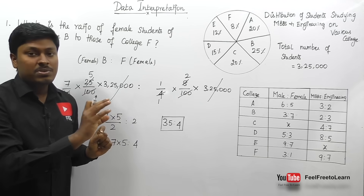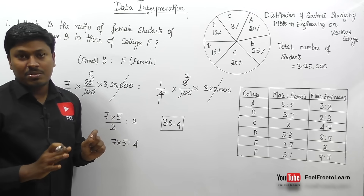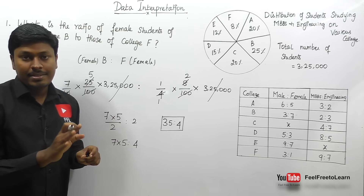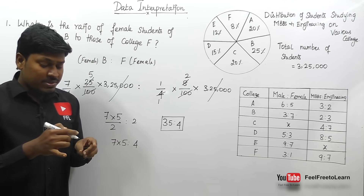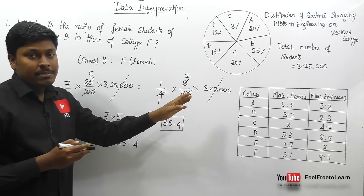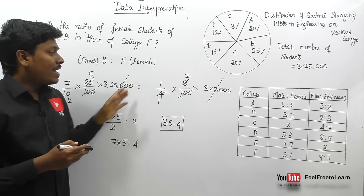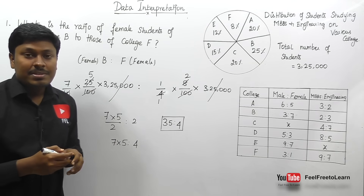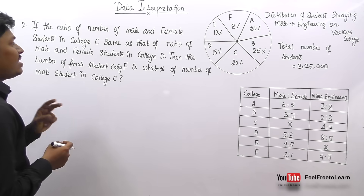So 7 fives are 35, giving a final ratio of 35:4 for question 1. Always write this in a single step to cancel values quickly rather than calculating separately.